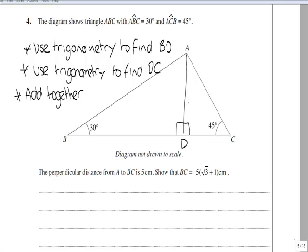In question 4, you are given a triangle with angles ABD 30°, ACD 45°, and you are given that the perpendicular distance from A to BC is 5 cm.